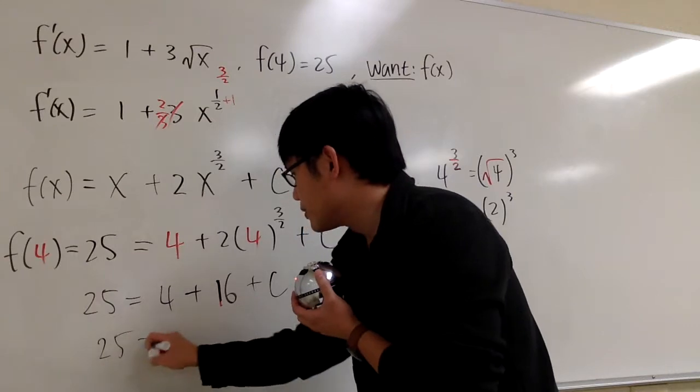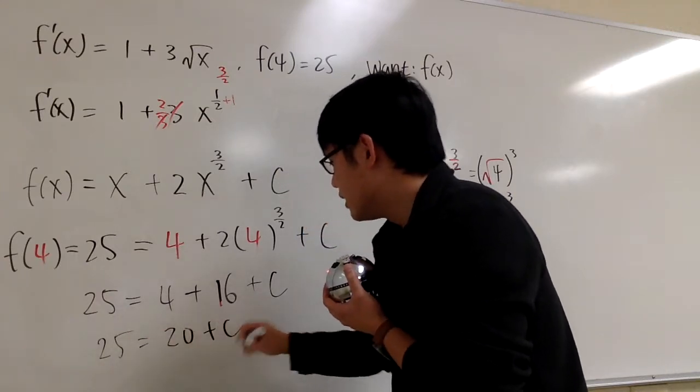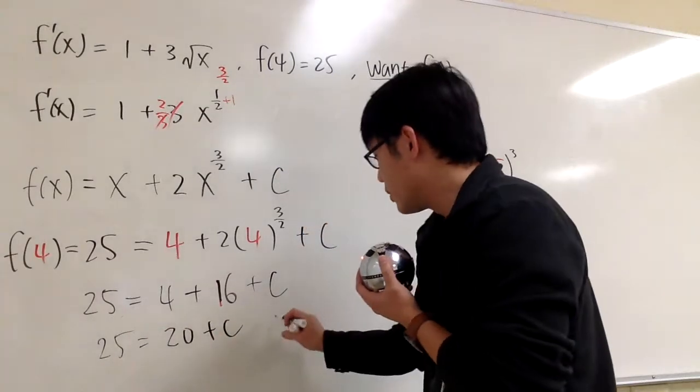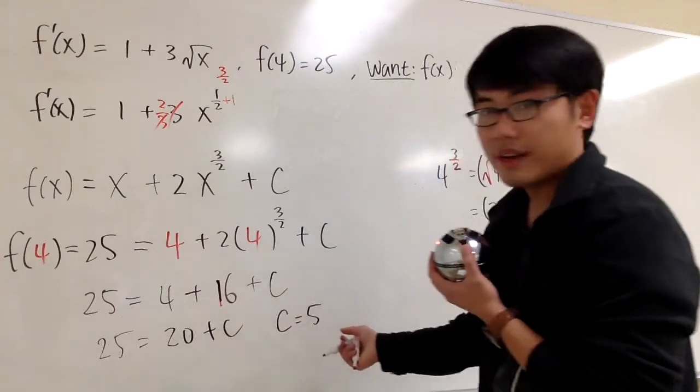This is 25 equals 20 plus C, and at the end, you know that C will be 5.